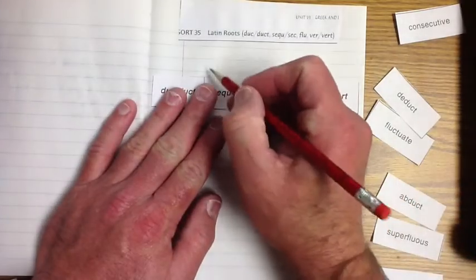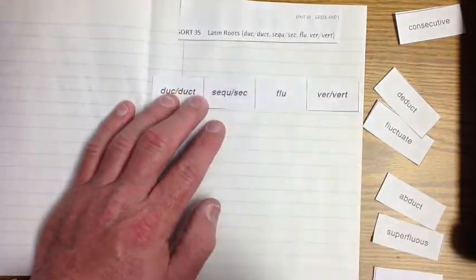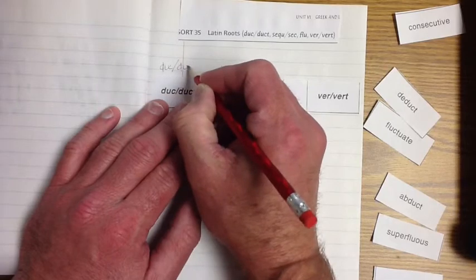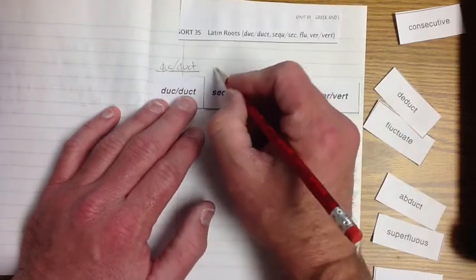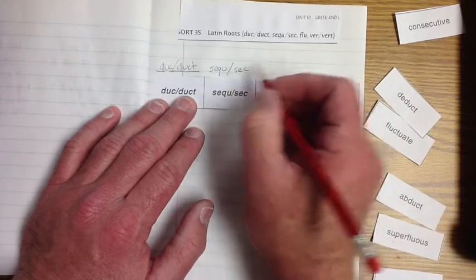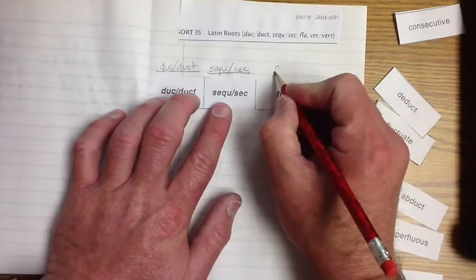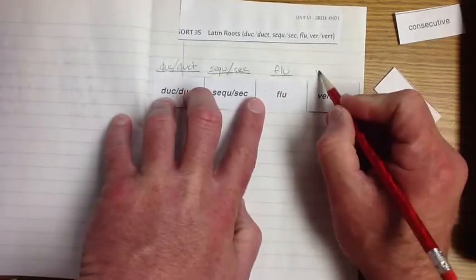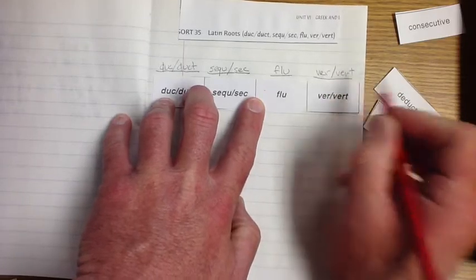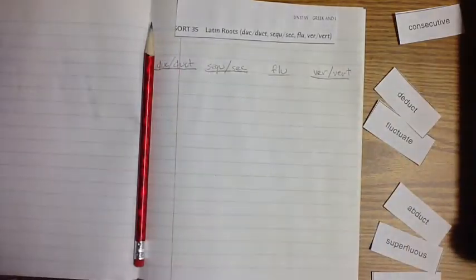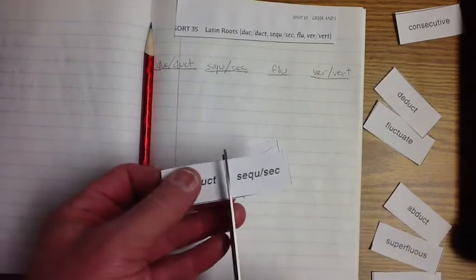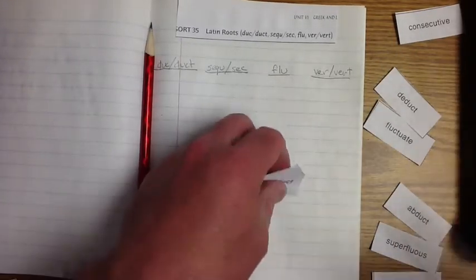And then what I want you to do is I want you to skip a line because we're going to write some definitions up on the top up here. So, put D-U-C slash D-U-C-T underline, S-E-Q-U slash S-E-C underline, F-L-U, V-E-R slash V-E-R-T. Interesting. I'm interested about that one also because we use vert in a couple of the words that we use in math. So, we'll have to see what that actually means.